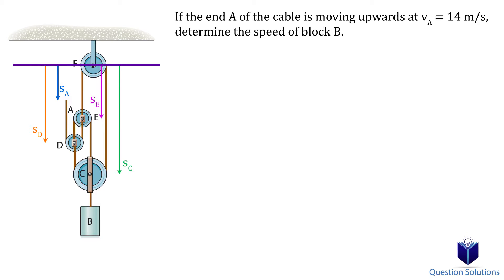Now we can write our equations for each of the cables. For the first cable, we have SD minus SA plus SD minus SE, which is equal to the first length. For the second cable, we have SD minus SE plus SC minus SE, which is equal to the second length.